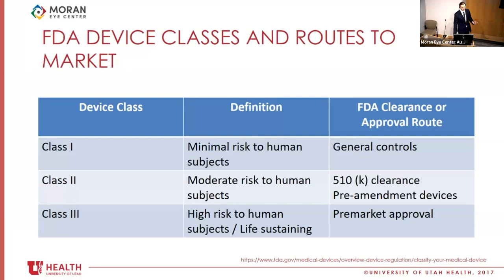Class 3 devices — such as pacemakers — are high-risk products with life-sustaining functions and require rigorous clinical studies showing safety data prior to being placed on the market. At the end of that process they are given the designation of 'FDA approved.' When you hear 'FDA approved,' that is the result of an actual safety trial — which is an important distinction.